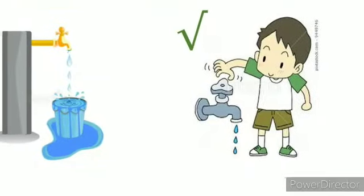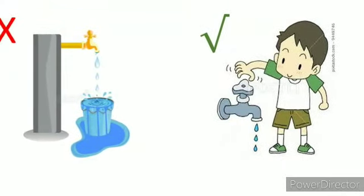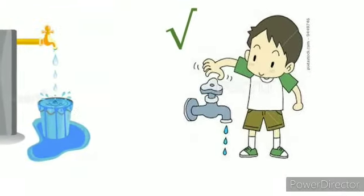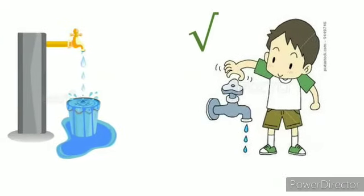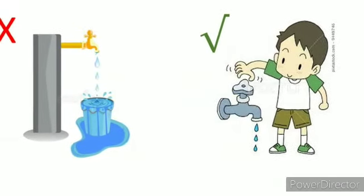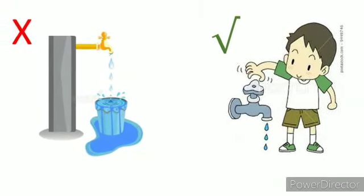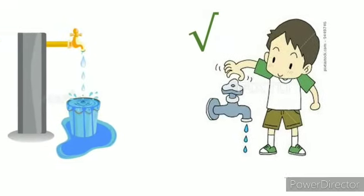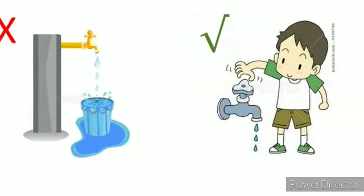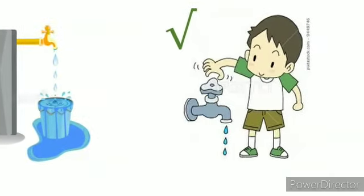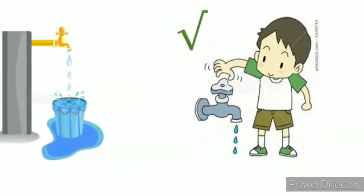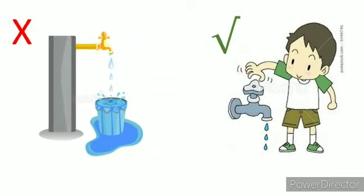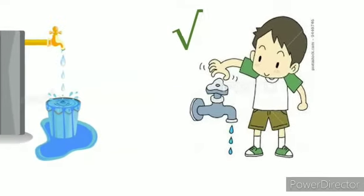Now in this picture, in the first picture water is flowing out of the bucket, and in the second picture the boy is closing the tap. So always, when the water is overflowing or when the tap is open unnecessarily, you have to close the tap.